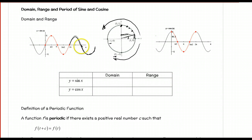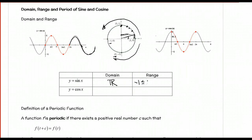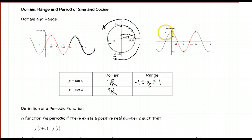Moving on to domain and range of these graphs: the sine graph continues to the left and right forever, so the domain is all real numbers. The lowest value it will ever hit is negative 1 and the highest is positive 1, so the range is negative 1 ≤ y ≤ 1. For the cosine, the curve also continues forever in both directions, so the domain is all real numbers, and the maximum is 1 and minimum is negative 1, giving the same range.